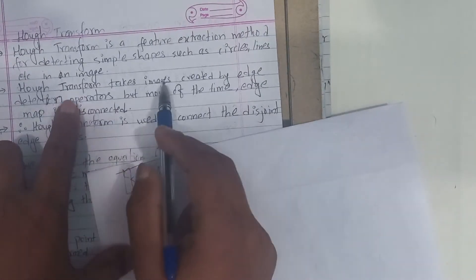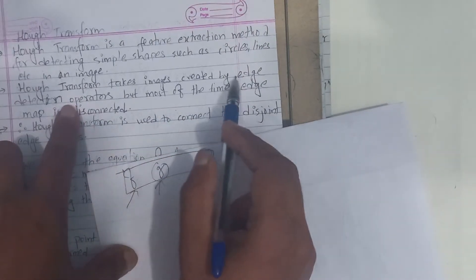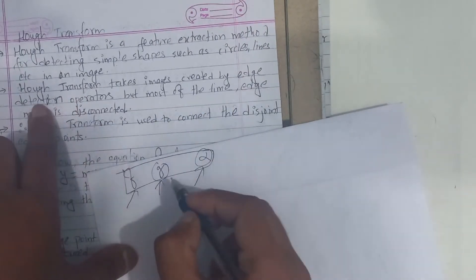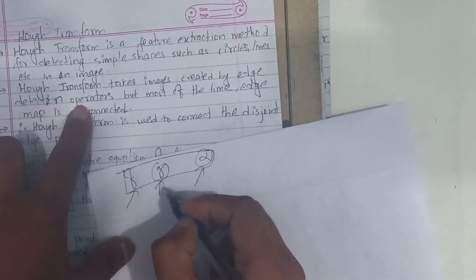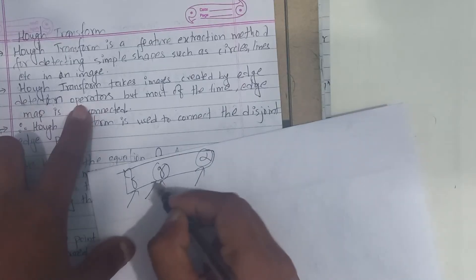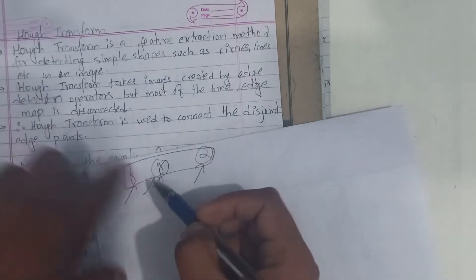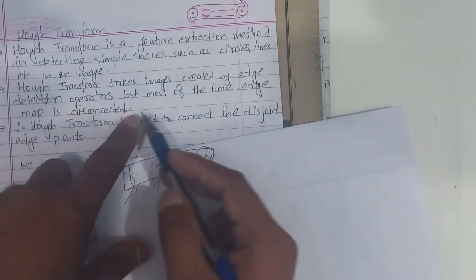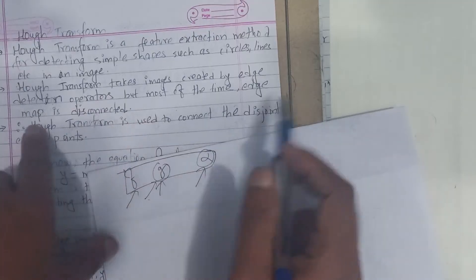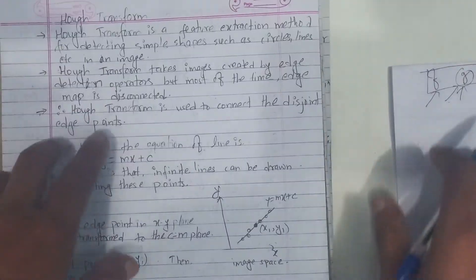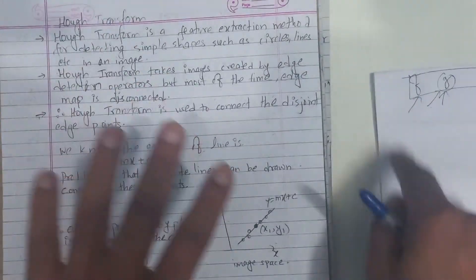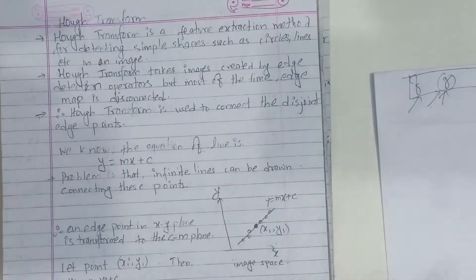The Hough Transform takes an image created by an edge detection operator. The input is the edge map, but most of the time the edge map is disconnected, so the edge points are disconnected.